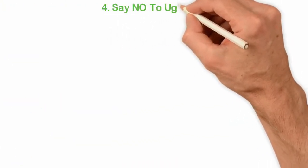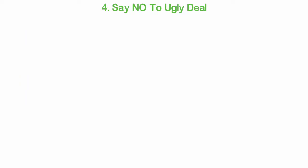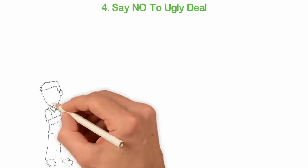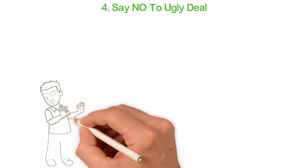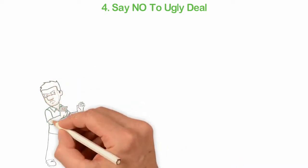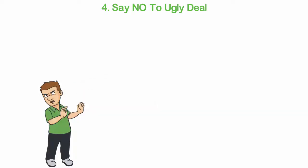4. Say no to ugly deals. This follows the point above. Since my primary goal isn't to become a billionaire, it's pretty easy for me to say no to any ugly deal even if such business deals promise to make me a lot of money.